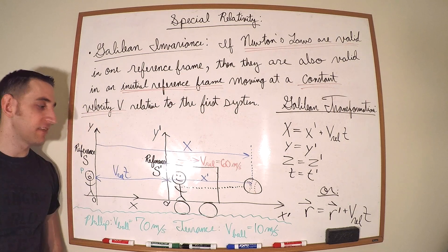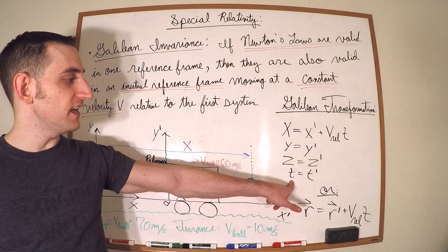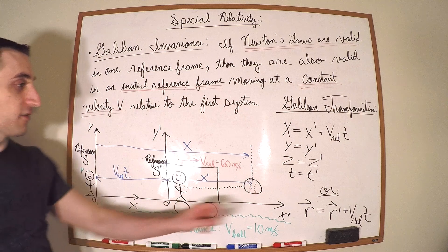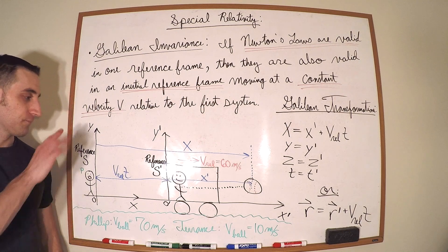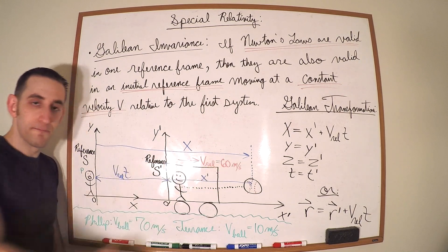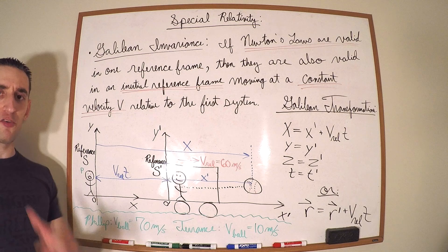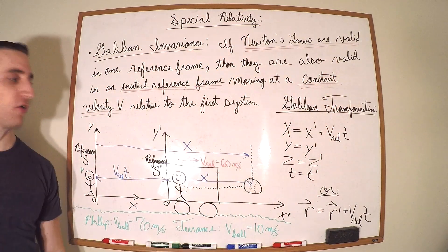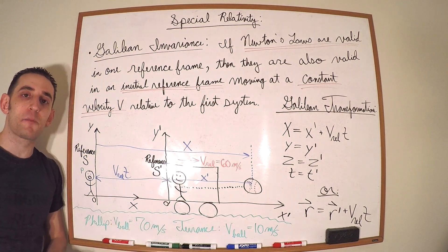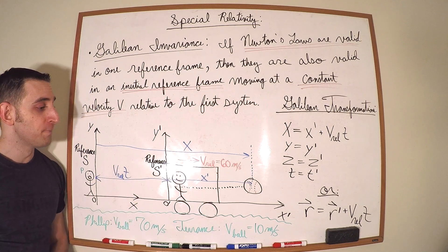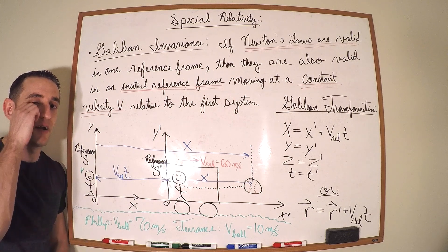The transformation relating time between reference frame S prime and S is: time t for Philip equals t prime for Terrence — not surprising. Then Terrence starts speeding off and throws a baseball. He measures it and says, 'It's 10 meters per second.' So he calls his buddy Philip.